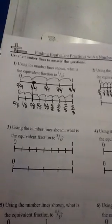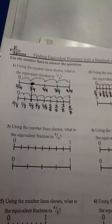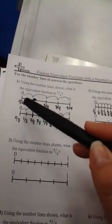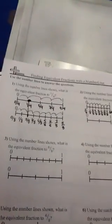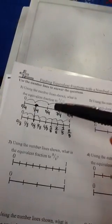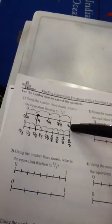In the first problem, we did this in class. The directions say, using the number line shown, what is the equivalent fraction to 1/4? For the first number line, we have to count the number of spaces that the line has been divided into. So for example, this one is 1, 2, 3, 4. That tells us we're going to label this number line in fourths.